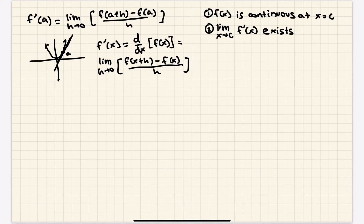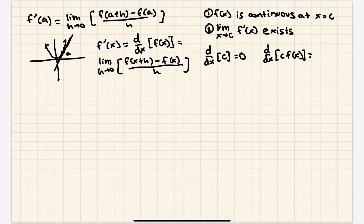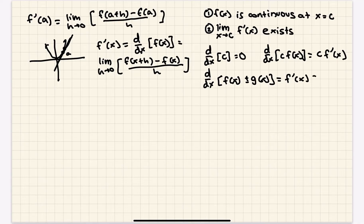Just like with limits, there are important properties. First, the derivative of a constant is zero — because a constant line is horizontal, so its slope is zero. Second, the derivative of c·f(x) is c·f'(x) — you just take the constant out. Third, you can add or subtract functions: the derivative of f(x) ± g(x) is f'(x) ± g'(x). You might wonder about products and quotients — we cannot simply multiply or divide derivatives; there are separate rules for those, which we'll get to shortly.